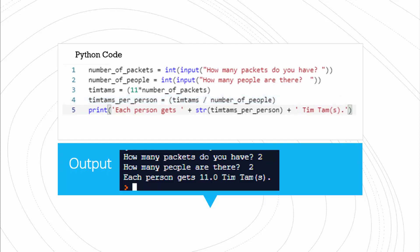So once you've done that, we then need to print our final message. And our final message will say 'each person gets' the number of Tim Tams and then finally 'Tim Tams' as well. Now to get this to work, you need to use concatenation, and this is where these plus symbols come into play.